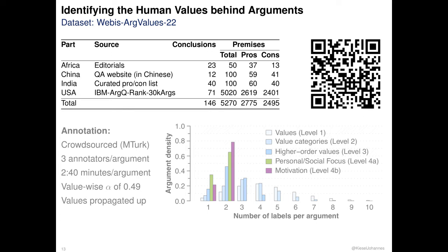So we asked our international undergrad students for recommendations on argumentative websites targeting their home regions. We settled on three additional sources from different genres: the opinions section of the African Arguments news page, the question answering website Zhihu, and the Indian group discussion ideas webpage, which lists interesting discussion topics and arguments for debate training. Importantly, we want to highlight that this dataset is not intended to represent a certain source of arguments, but rather to allow for developing robust automated systems.